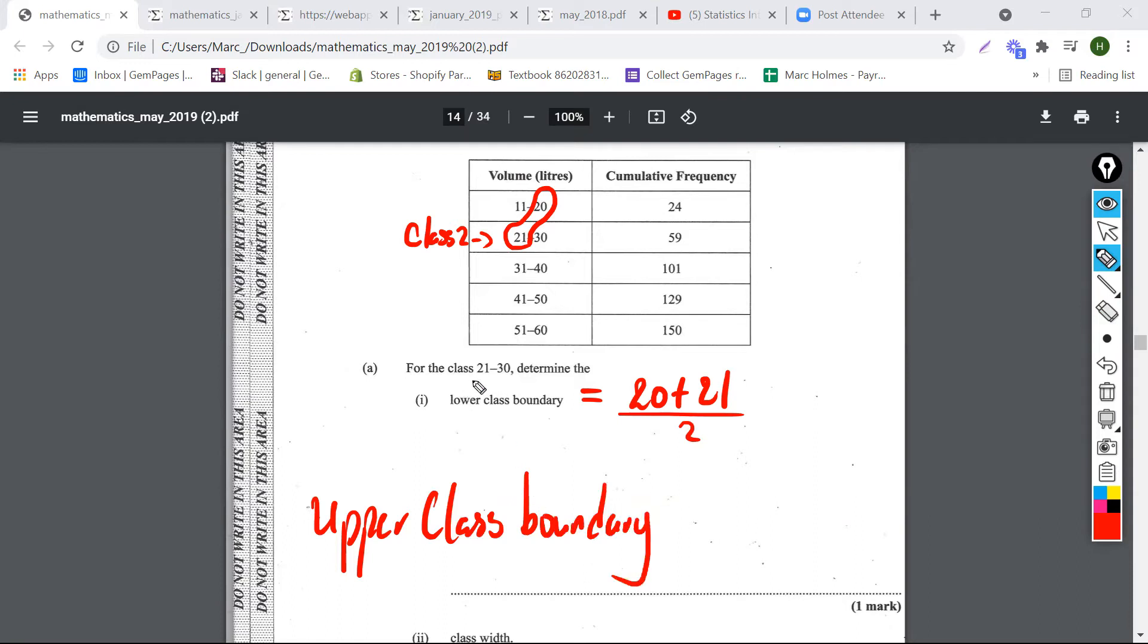So remember the class is 21 to 30 and the lower limit for the class is 21, the low number for the class is 21. So they want the lower class boundary. How do we find that? It's always this 21 and this number here and it's usually divided by 2. So we end up with 21 plus 20 over 2 and that would give us 20.5.